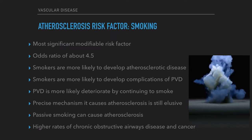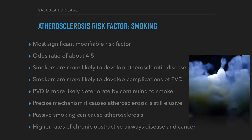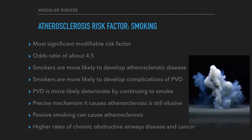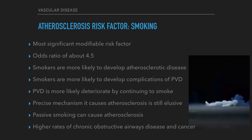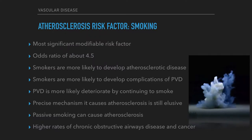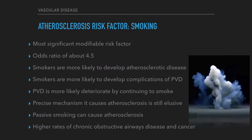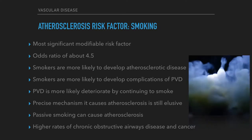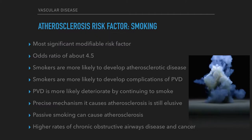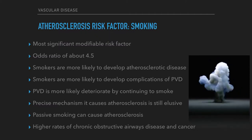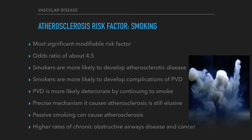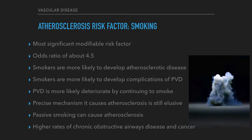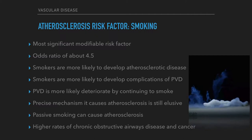Without a doubt, the most significant modifiable risk factor for atherosclerotic disease is cigarette smoking, giving an odds ratio of about 4.5. Smokers are more likely to develop atherosclerotic disease, to develop complications of peripheral vascular disease, and for it to deteriorate by continuing to smoke. The precise mechanism by which smoking causes atherosclerosis is still somewhat elusive, despite the fact that the connection with claudication was recognized in 1911. There is a much smaller but present increased risk with passive smoking. Because of the high rates of smoking among vascular patients, there are also higher rates of chronic obstructive airways disease and cancer in vascular patients.